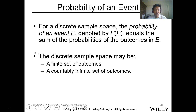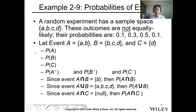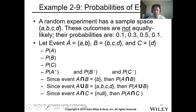For a discrete sample, the probability of event E equals the sum of the probabilities of the outcomes of the elements in event E. The discrete sample space may be a finite set or a countably infinite set of outcomes. For example, a random experiment has sample space {a, b, c, d}. The probabilities are: P(a) = 0.1, P(b) = 0.3, P(c) = 0.5, and P(d) = 0.1. The total probability equals 1.